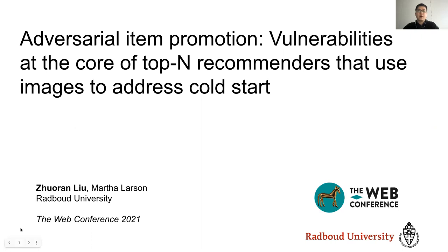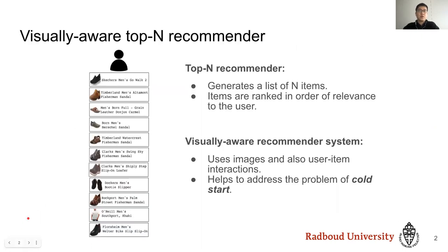So the first question is: what is a visually aware Top-N recommender system? A Top-N recommender system creates a list of Top-N most relevant items for each user. A visually aware Top-N recommender system leverages images to generate recommendations, using both images and information about interactions of users with items. Such systems are particularly important because they address the fundamental challenge of Cold Start. Cold items are items with which users have not yet interacted, and visual content can be used as item information until enough interactions accumulate.